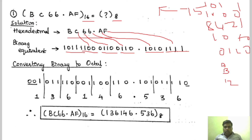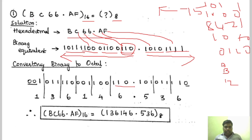Now after doing this, we have to group this into 3 bits. The same rule is applicable: for the integer part, start from LSB to MSB, and for the fractional part, start from MSB to LSB. So grouping gives: 1, 1, 0 — that is the first group; 0, 0, 1 is the second group; 1, 0, 0 is the third group; then 0, 1, 0; and 1, 1, 0. Only one bit is left, so I am adding two extra zeros since three bits are required. For the fractional part, starting from MSB: 1, 0, 1; then 0, 1, 1; and the two remaining bits get an extra 0 added — 1, 1, 0.